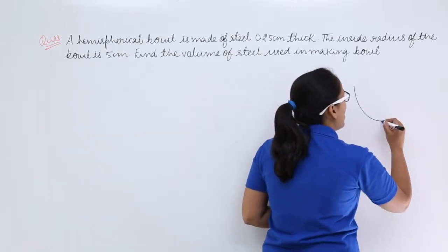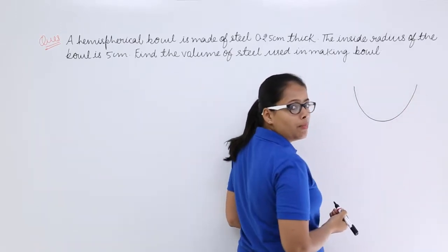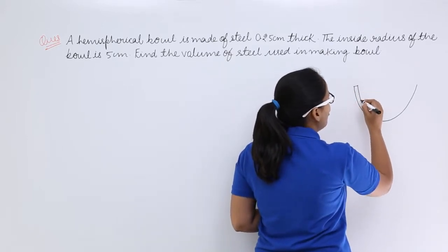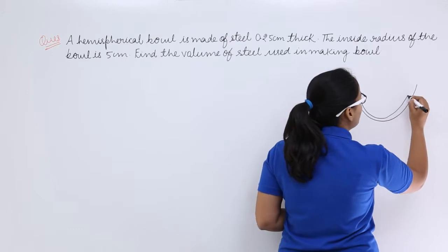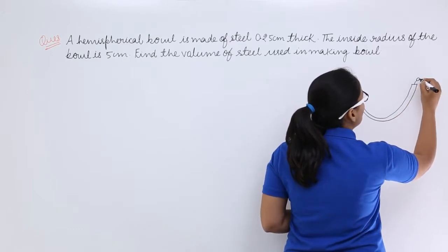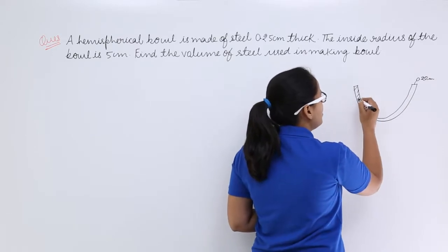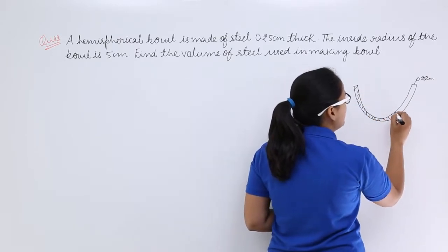You can imagine this shape as a bowl which is hemispherical in shape, made of steel with a thickness of 0.25 cm. This is the thickness of the hemispherical bowl.